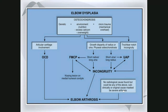Frustratingly, sometimes there's no radiological cause that can be found, but it can be any of the above. Often in older dogs that already have severe arthrosis, the underlying cause is not seen on radiographs because of all the new bone formation due to the arthrosis.